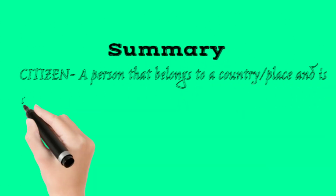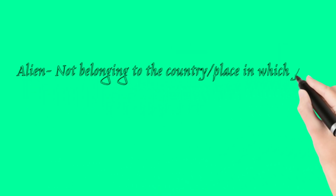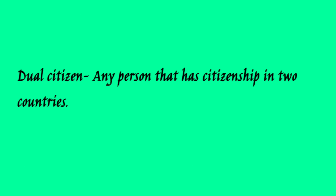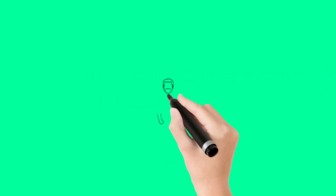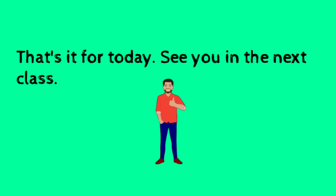So that is basically it, students. We're just going to summarize what we went through today. We looked at a definition for citizen — a citizen is a person that belongs to a country or a place and is therefore entitled to the rights and freedoms of that place. We also looked at the term alien, which means not belonging to the country or place in which you are currently residing. We also looked at dual citizen, which describes any person that has citizenship in two countries. Basically, that's it for today. Hope you would have learned something from the class and we will see you in the next class.